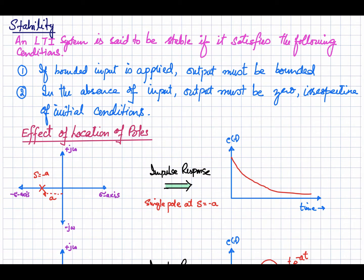The stability of your system depends upon the position of the poles. We will see how the position of the poles affects the response and stability of your system. First, assume we have a pole at s equal to minus a, so our pole is in the left half plane on the real axis.